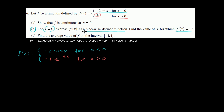So we've done the first part — we expressed f prime of x as a piecewise defined function. We didn't define the derivative when x equals 0, because it's actually not going to be defined there. Now let's do the second part: find the value of x for which f prime of x equals negative 3.